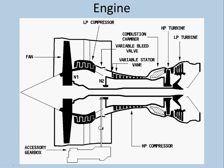The Variable Stator Vane (VSV), on the other hand, is fully closed during engine start and fully open at high engine thrust. It is used to maintain optimum compressor efficiency at steady state and also provides a good stall margin for transient engine operations. The fan at the front pulls in air for the engine to work, and on the other side you have the exhaust.